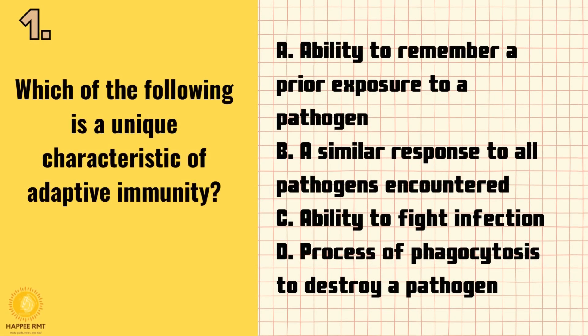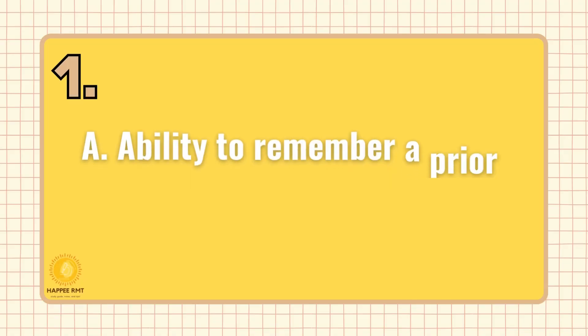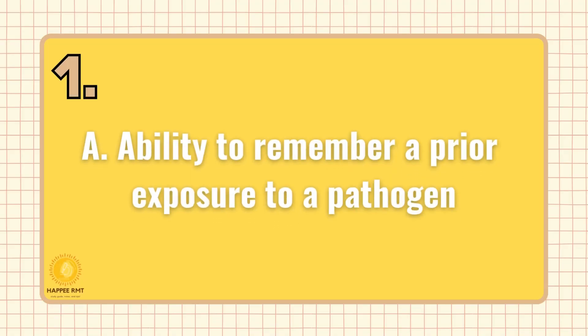Number 1. Which of the following is a unique characteristic of adaptive immunity? A. Ability to remember a prior exposure to a pathogen. B. A similar response to all pathogens encountered. C. Ability to fight infection. D. Process of phagocytosis to destroy a pathogen. Answer is A: Ability to remember a prior exposure to a pathogen.